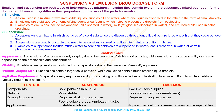Comparison between suspension and emulsion. Components: suspension contains solid particles in a liquid; emulsion contains two immiscible liquids. Stability: suspension is less stable; emulsion requires emulsifiers for stability. Dosing accuracy: suspension requires shaking before use; emulsion requires mixing before use.